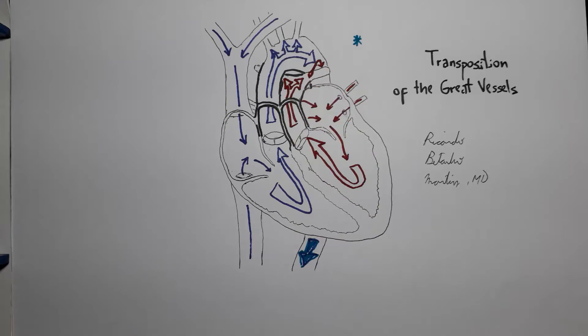Meanwhile, what's the real problem? The deoxygenated blood coming from the body into the right atrium will then be drained into the right ventricle and be pumped back into the body through the aorta without receiving any oxygen or having carbon dioxide removed.